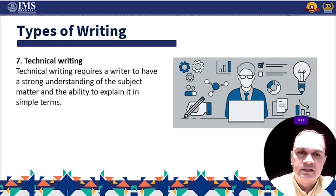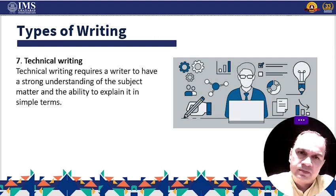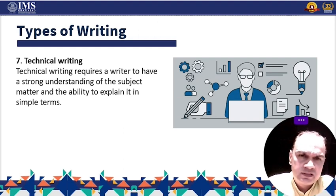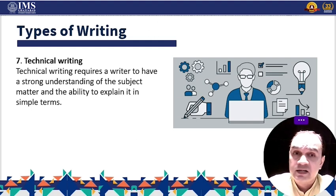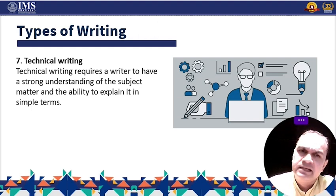Next is technical writing. Technical writing is a type of media writing that communicates complex information in a clear, concise manner. It can be found in user manuals, technical reports, and other technical documents. Technical writing requires a writer to have a strong understanding of the subject matter and the ability to explain it in simple terms. It is important for the writer to organize the information logically and use visuals to aid understanding.